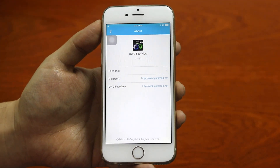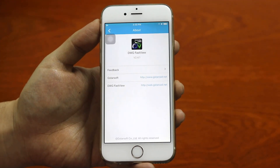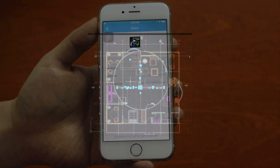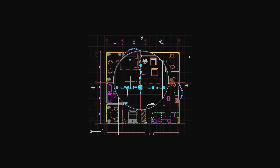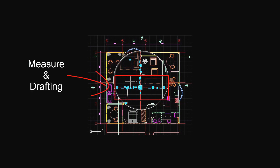If you have used a CAD drawing viewer before, maybe you have had trouble with some operations. For example, to get accurate measurement between two points, snapping intersected objects is a headache. I will talk about how to solve this problem on this CAD application.